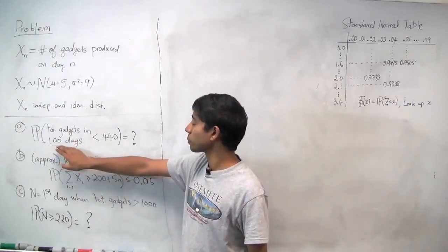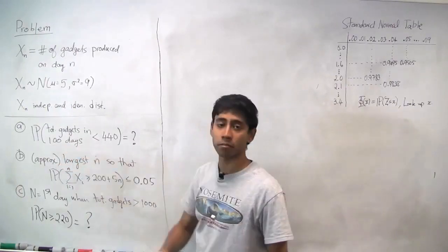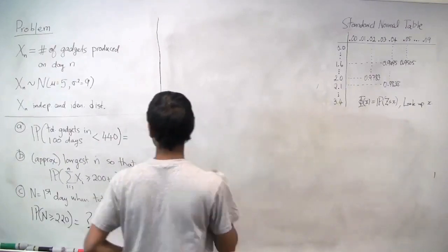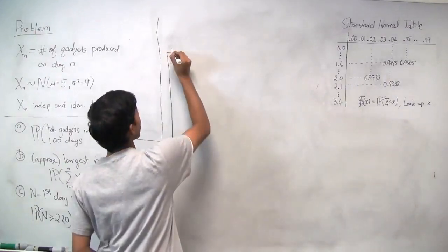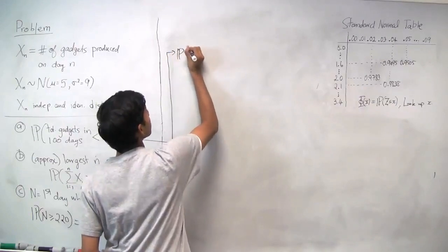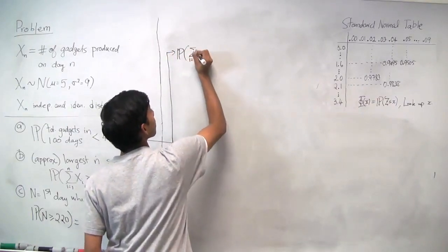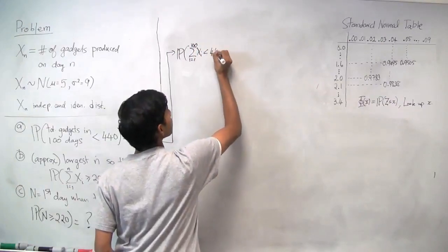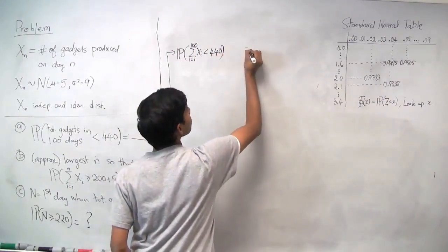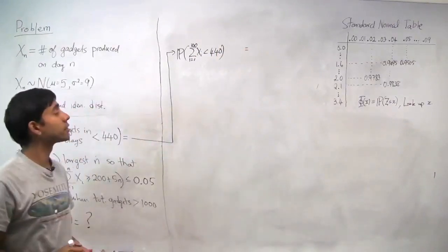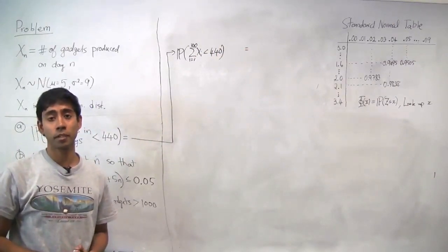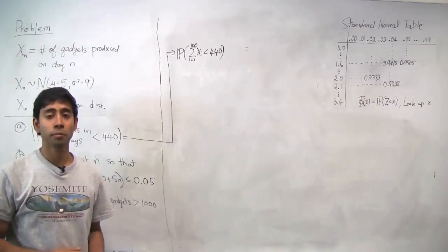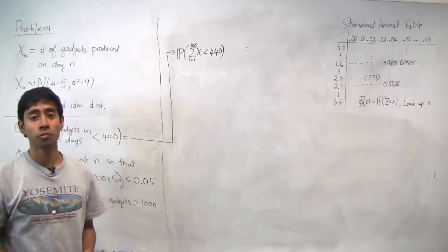We're looking for the probability that the total number of gadgets in 100 days is less than 440. We can write this as the probability of the sum of the gadgets produced on each of the 100 days being less than 440. Notice that this is a sum of a large number of independent random variables, so we can use the central limit theorem and approximate the sum as a normal random variable.